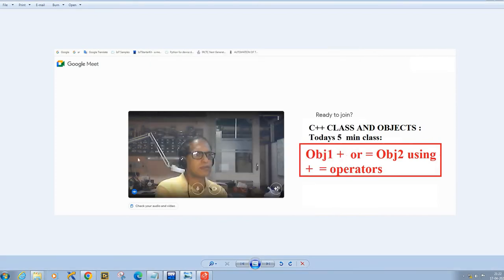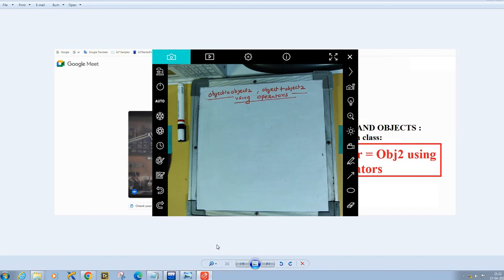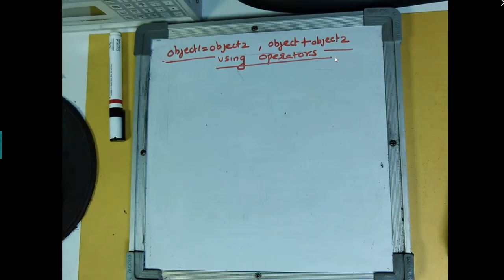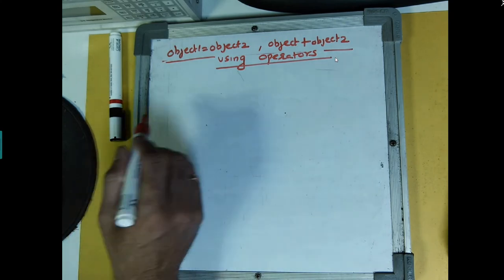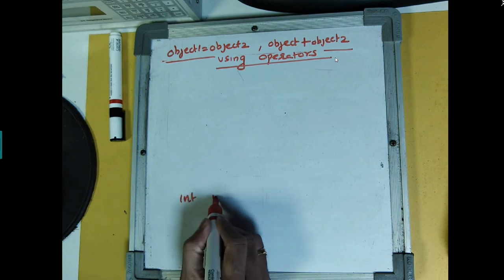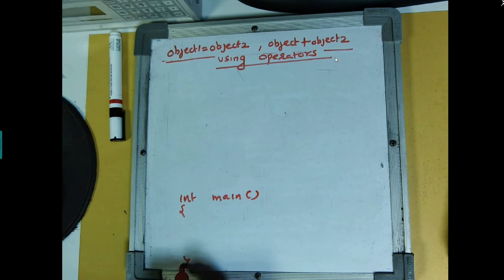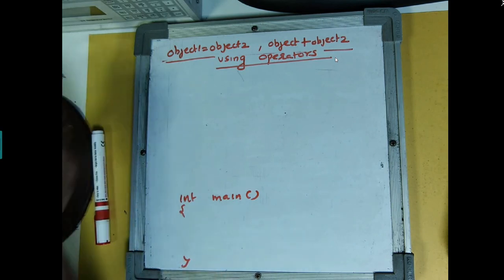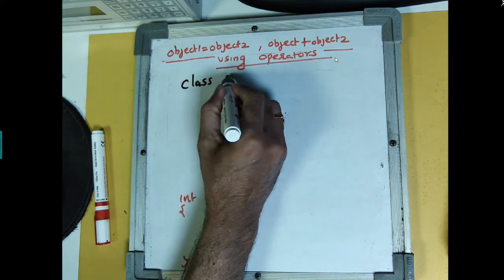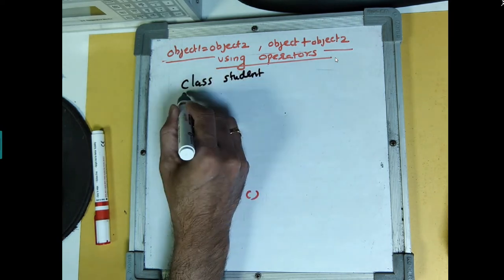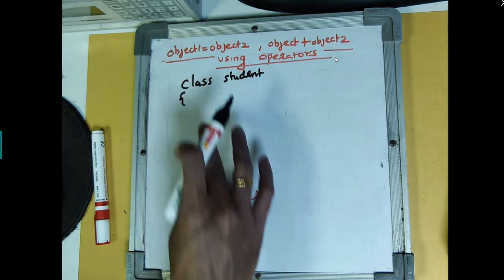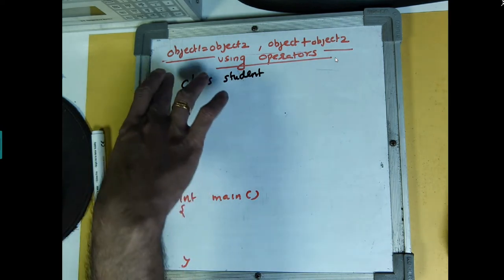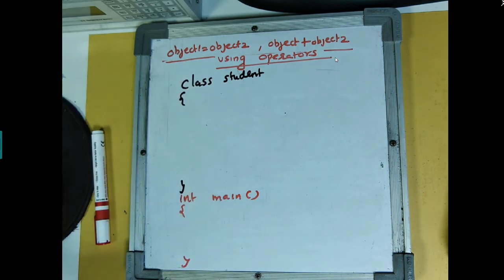Hello students, today we are going to discuss a special topic: how do you implement the plus and equal-to operators between two objects. To make you understand this, I start with an integer main function and a class defined as Student. As the color indicates, both are two different families and they can't interact unless you have the public section which is able to share data into the main.